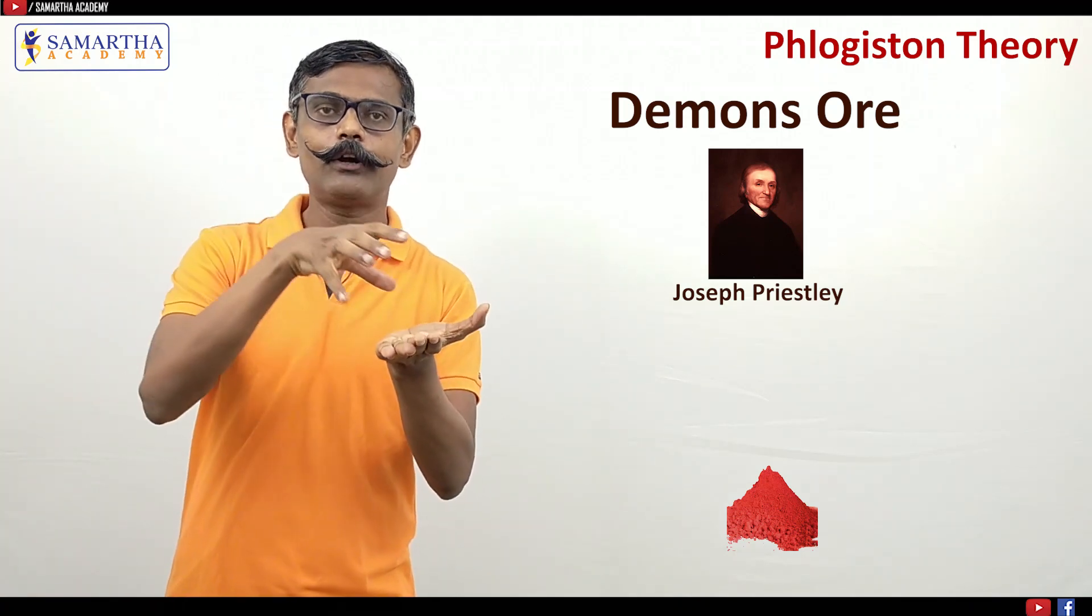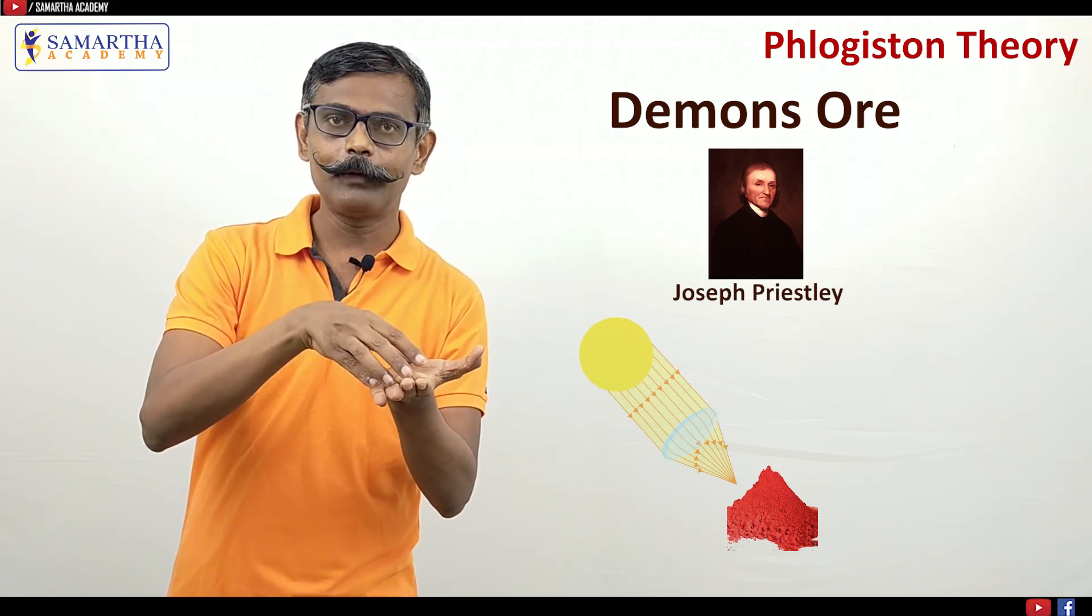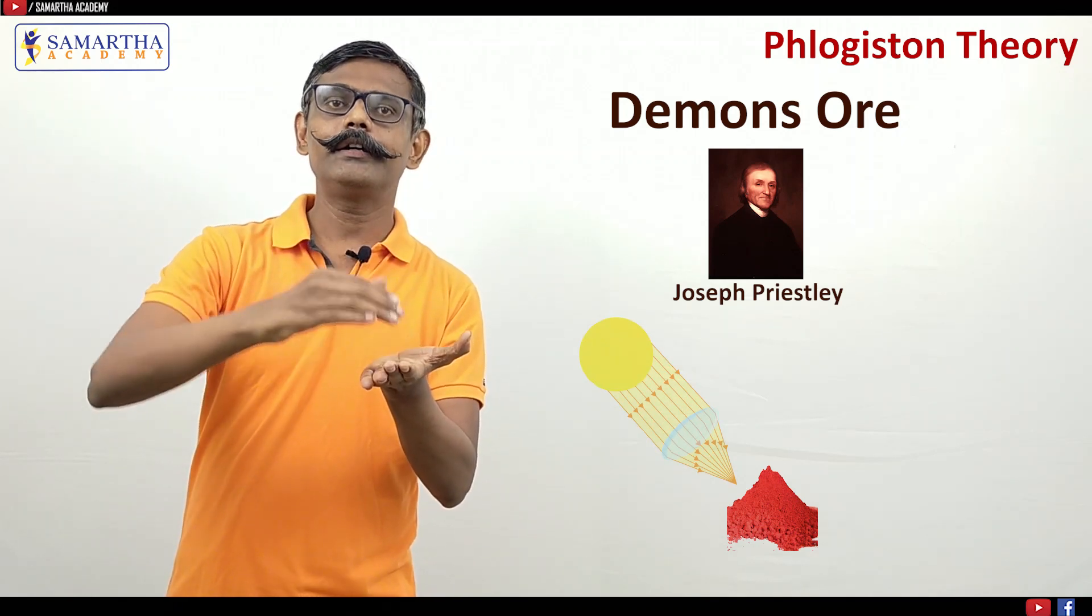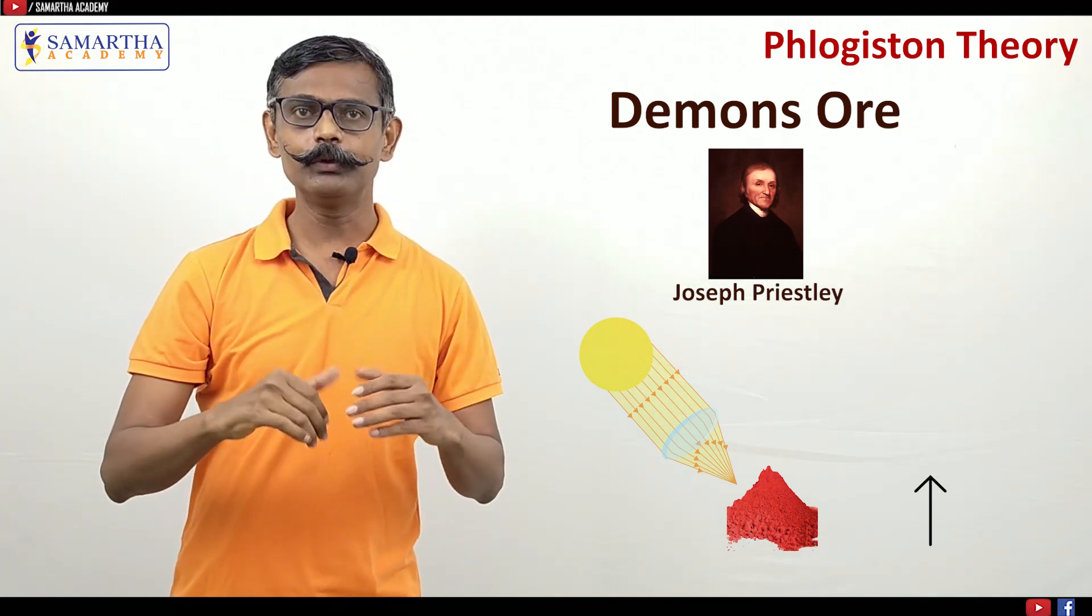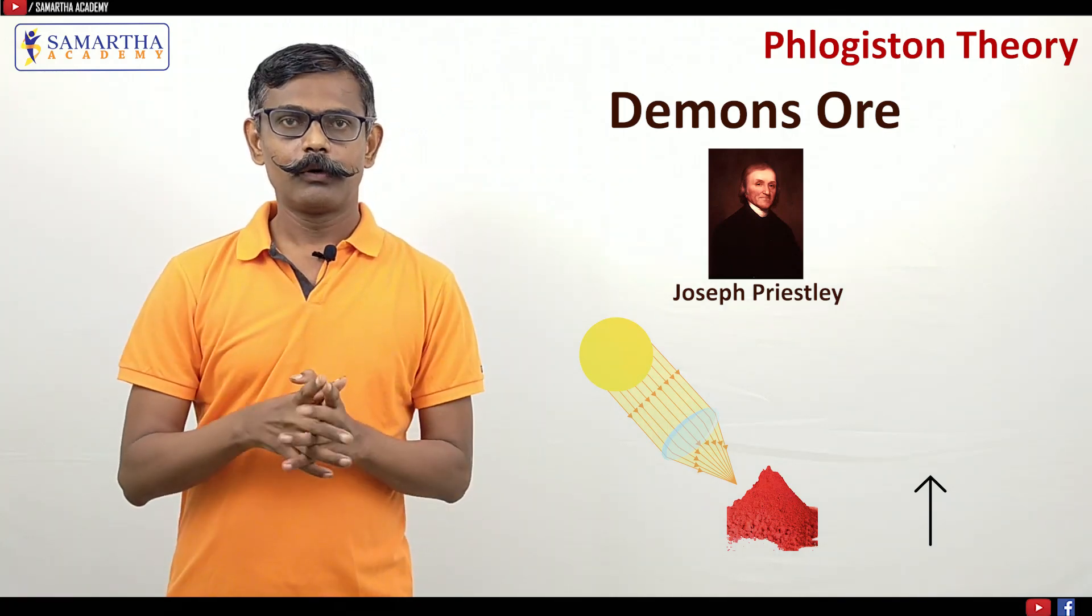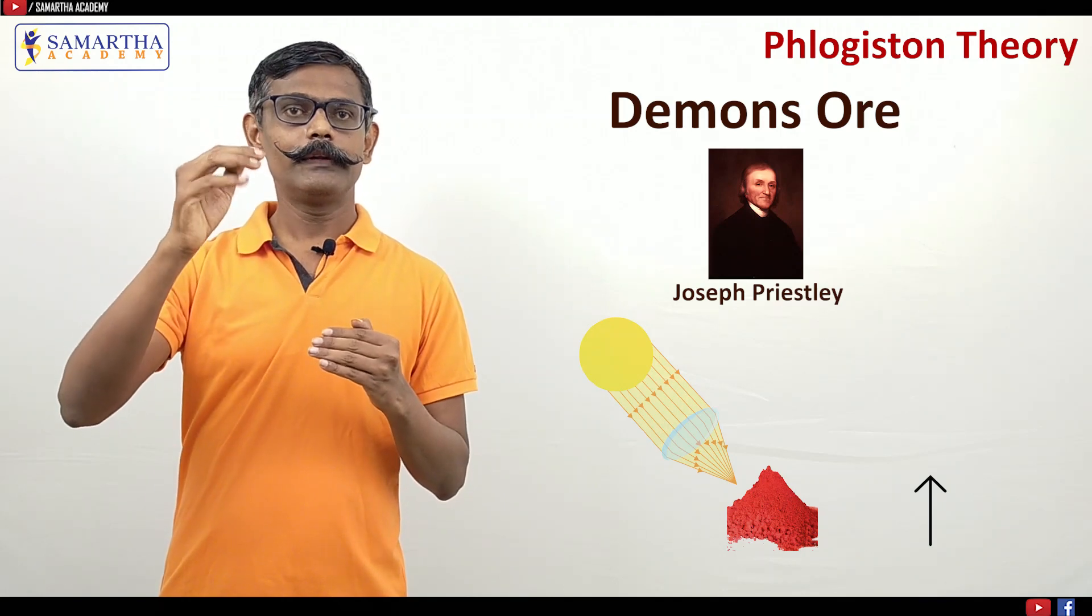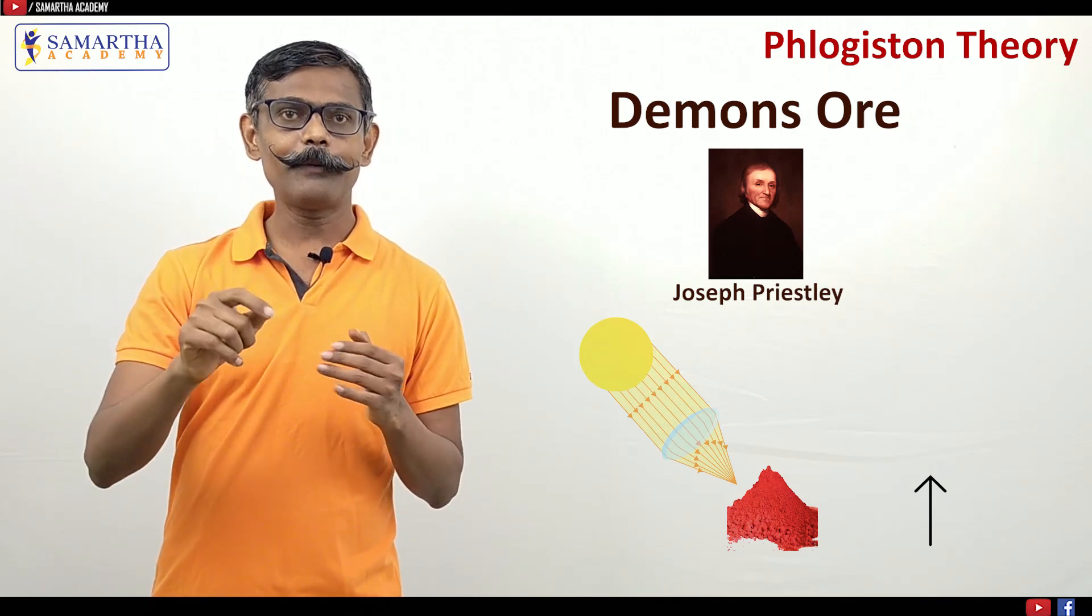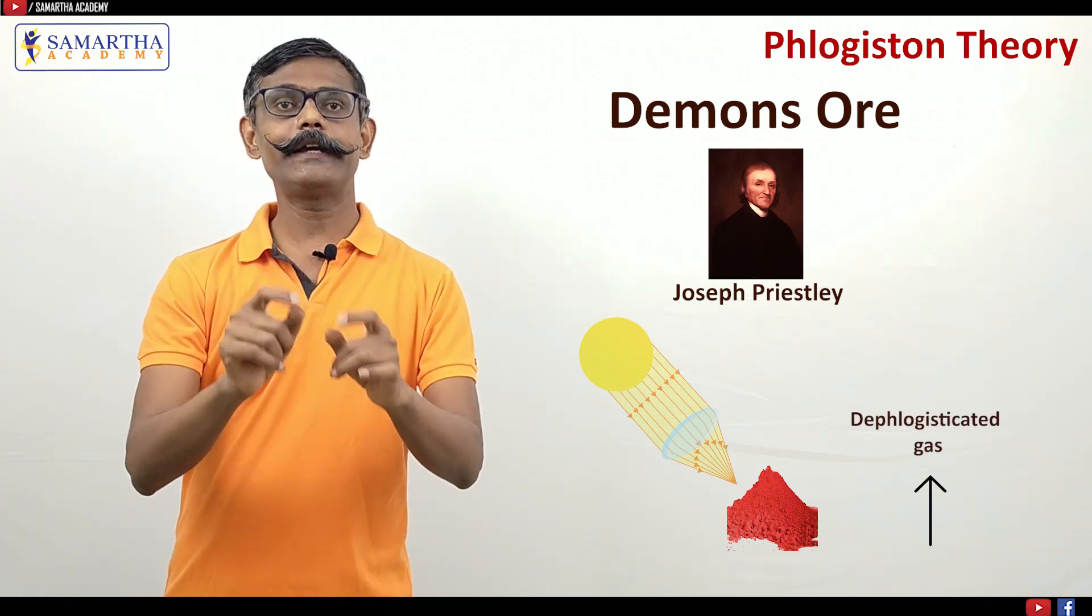He focused the sunlight on the red oxide of mercury, combustion he performed, and the gas evolved from his experiments. Due to combustion, gas evolved out. Whatever the air that evolved out, that air was named by Priestley as dephlogisticated air.